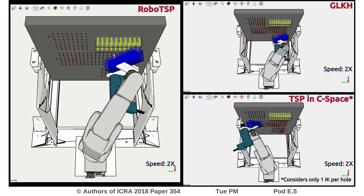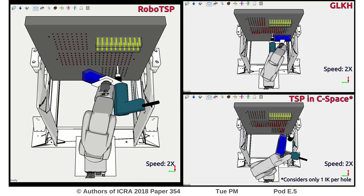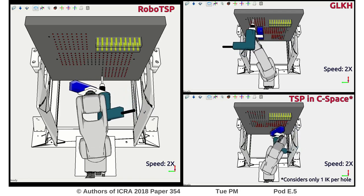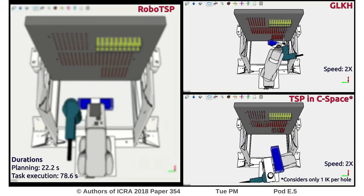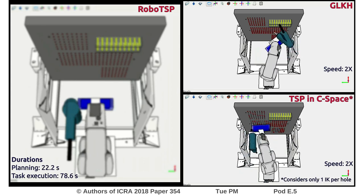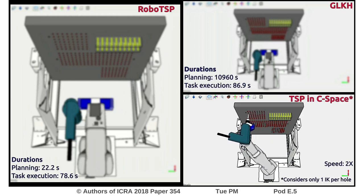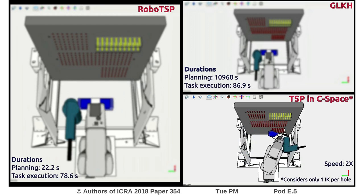Finally, we compare our method against two existing alternatives. The first is TSP in configuration space: if we consider only one configuration per target, the problem is reduced to a regular TSP in configuration space, where for each target we use the IK solution with the best manipulability index. The second is JLKH, a state-of-the-art solver for the generalized traveling salesman problem. While TSP in configuration space has similar running time as our method, the task execution time is higher since it doesn't optimize the IK choice per target. The execution time achieved using JLKH is similar to robot TSP, but the running time is several orders of magnitude higher.